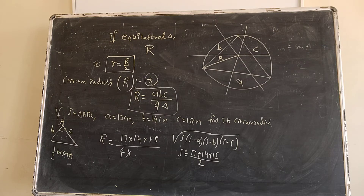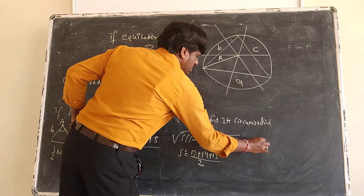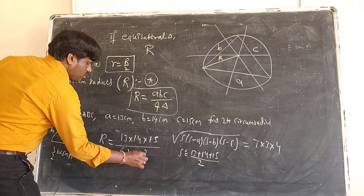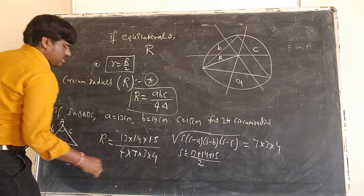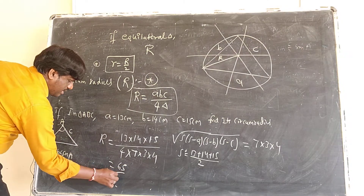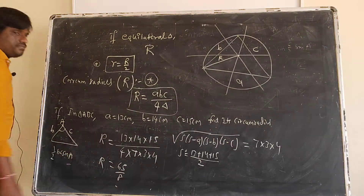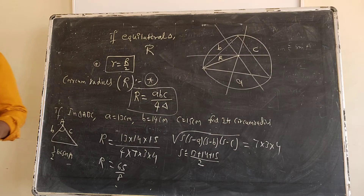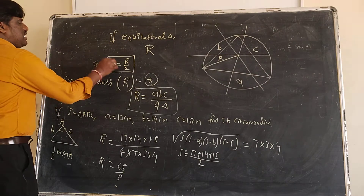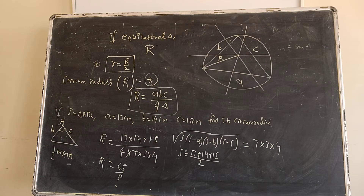The area of the triangle works out to 7 × 3 × 4. Substituting into the formula, capital R = 65/8. Also, the relationship between capital R and small r: for an equilateral triangle, small r = R/2.